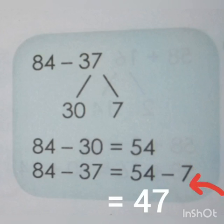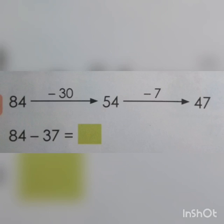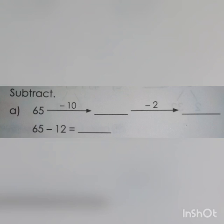From 54 if you subtract 7 then we will get the answer as 47. In this way we do mental calculation. I will repeat again: 84 minus 30 is equal to 54, and from 54 if you subtract 7 again then we will get the answer as 47. Therefore 84 minus 37 is equal to 47.